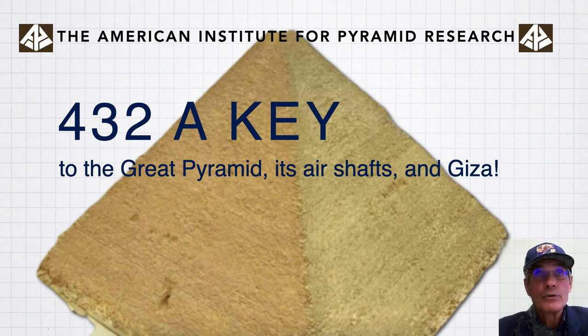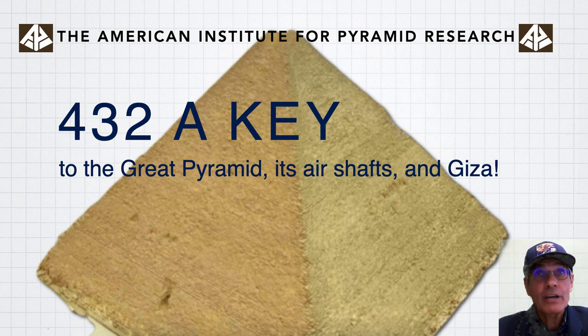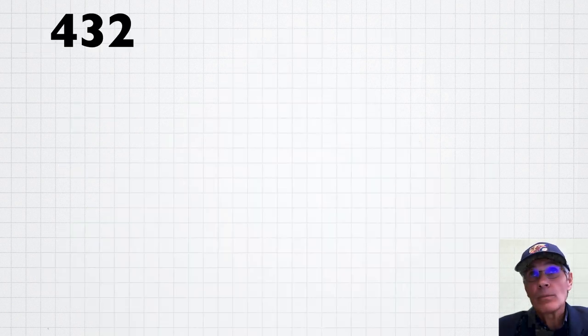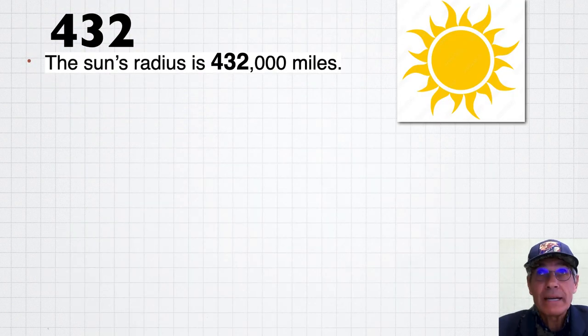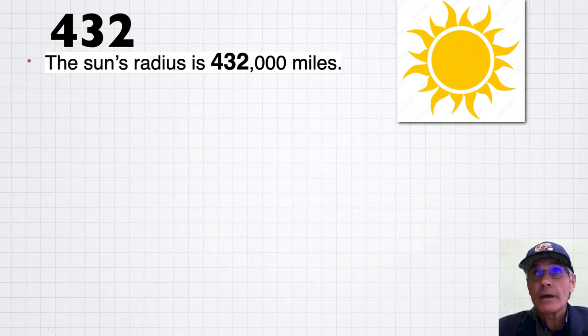The number 432, which my friend Robert Grant is now calling the Toth constant, is a key to the Great Pyramid, its air shafts, and Giza, and much more. 432, what about it? Well, the radius of the sun is 432,000 miles.